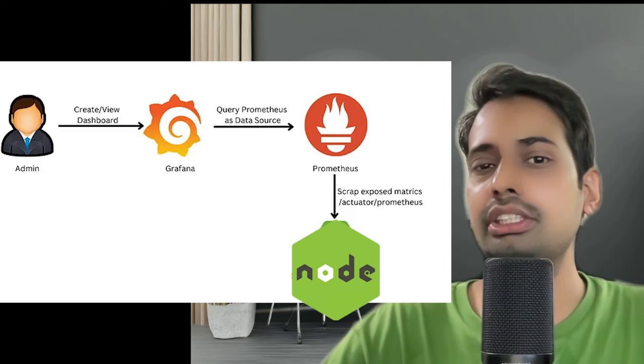Hi everyone and welcome back. In this video we are going to talk about another very interesting topic: NestJS with Prometheus and Grafana. They are like a sweet pair, similar to the ELK stack where we talk about Elasticsearch, Kibana, and Logstash. Similarly, we have Prometheus and Grafana, and we are going to talk about all these things in the NestJS context.